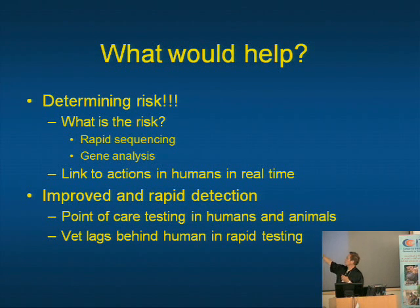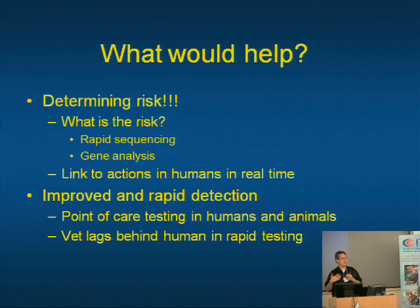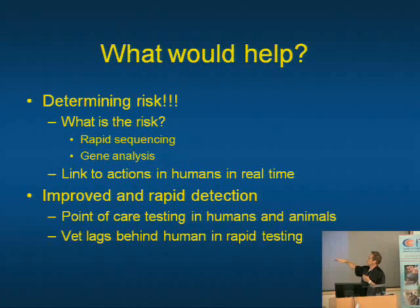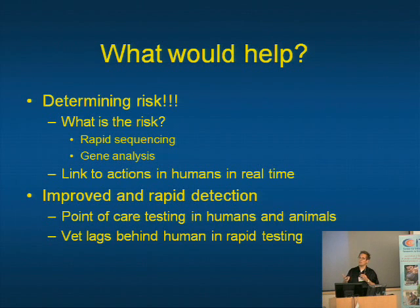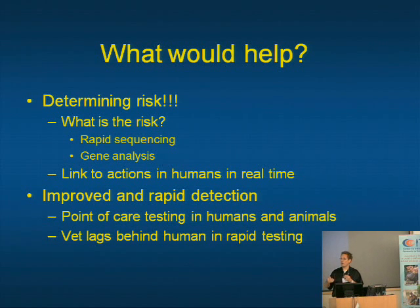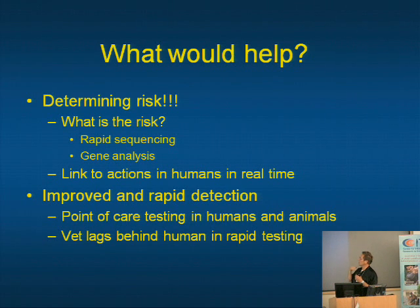We can kind of do sequencing of a virus, but it might happen six months or a year later — that helps us for future events but doesn't help us in the now. And really, taking some of those risks and linking them to actions in humans in real time is key. If we can isolate a virus and link it to what people are doing in real time, that allows us to intervene up front, not months down the road when the emerging disease is already out of the barn and spread among wildlife, domesticated animals, and humans.